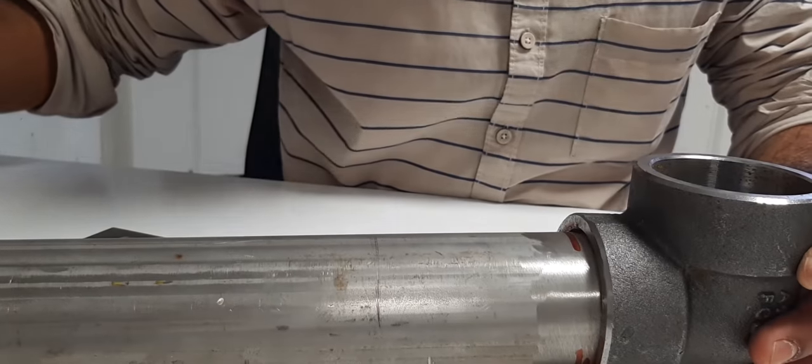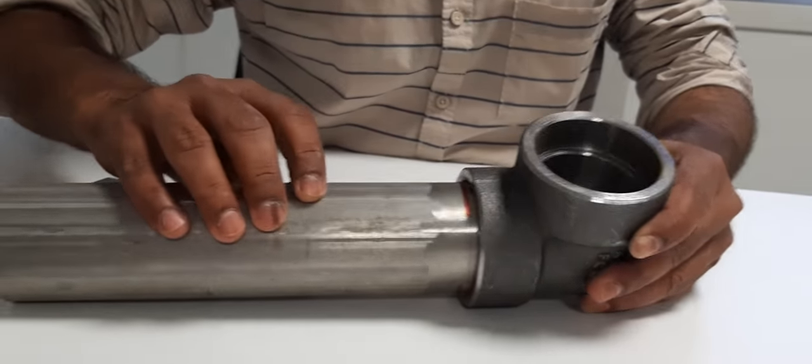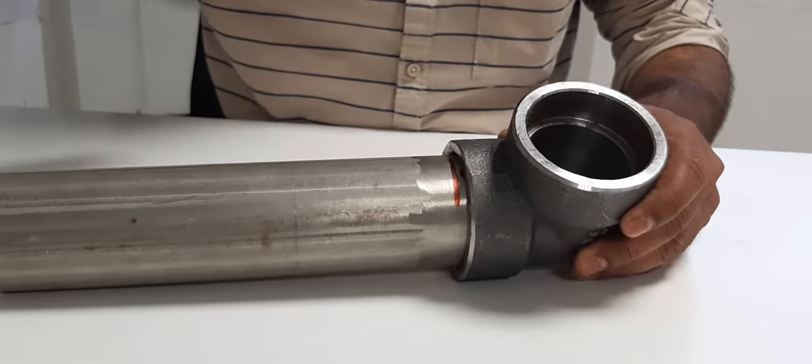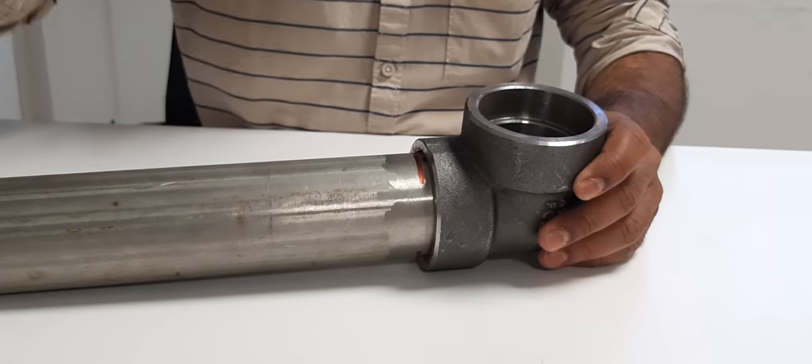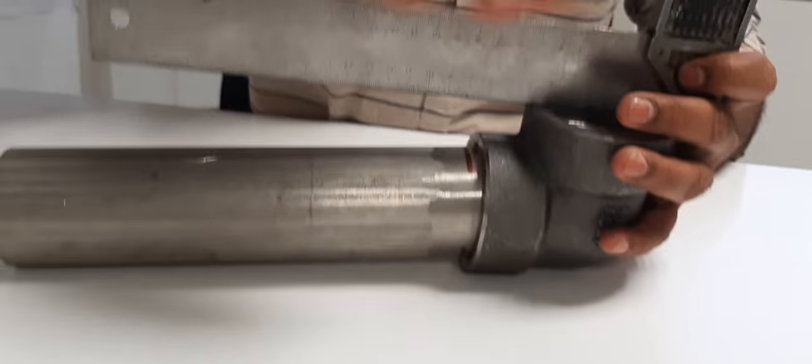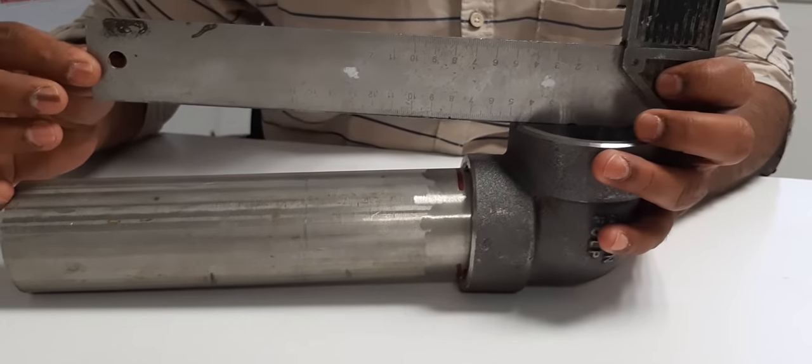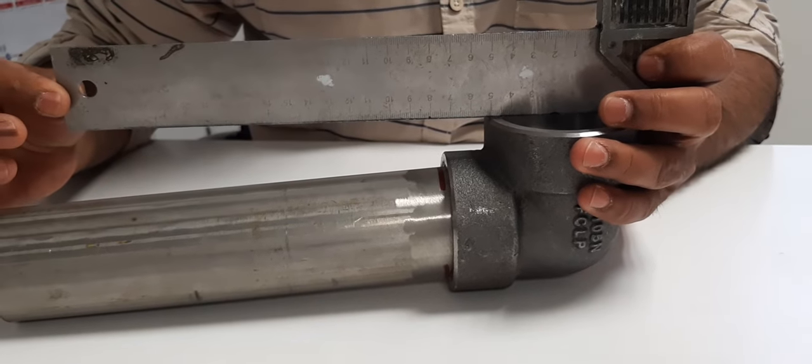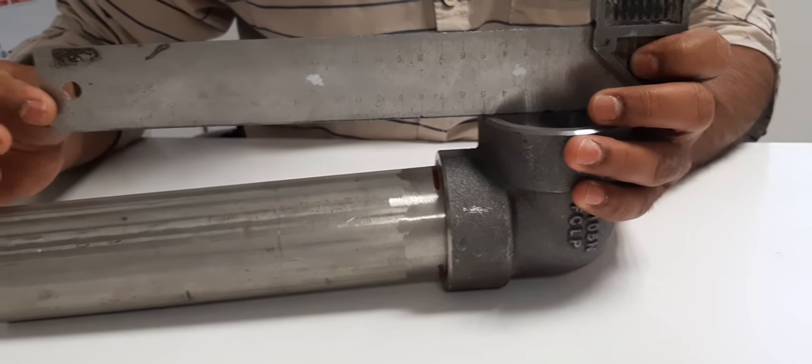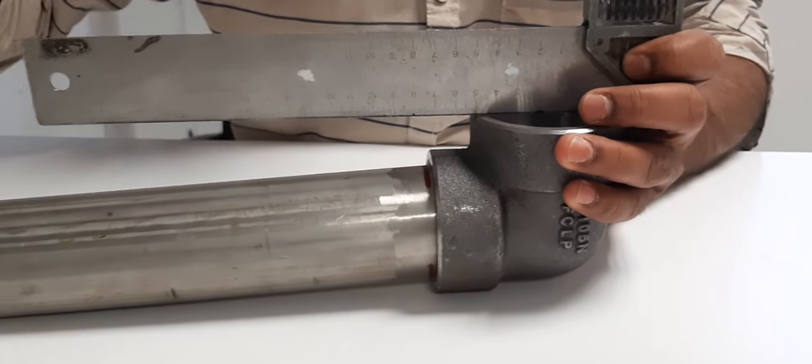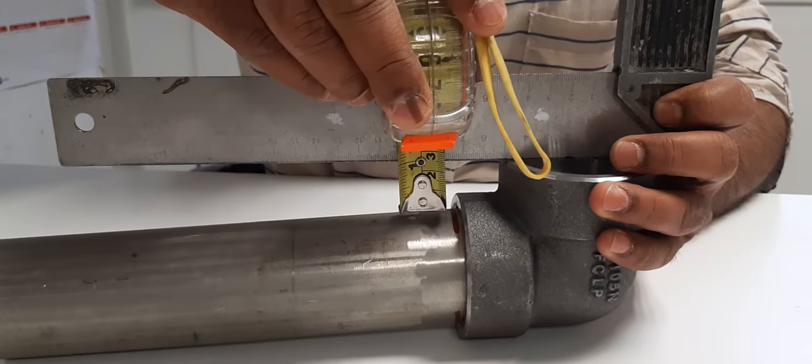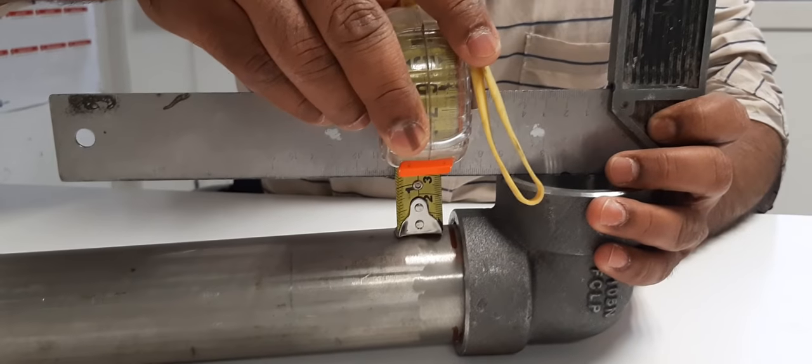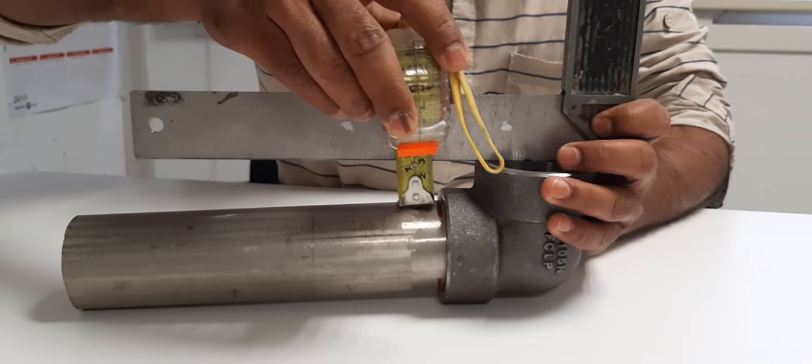We have another method also. We have to use triangle scale, put it like this, and we have to check the length from here to here.